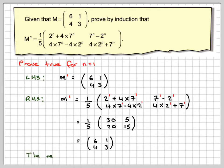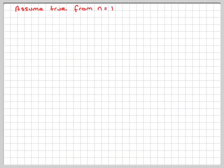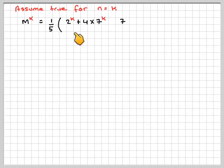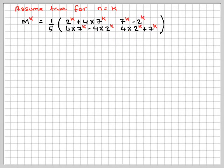Therefore, the result is true for n equals 1. Now we'll assume true for n equals k. So M to the k is 1 fifth of [2k + 4×7k, 7k − 2k; 4×7k − 4×2k, 4×2k + 7k].